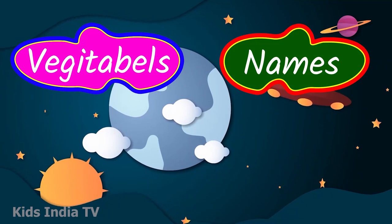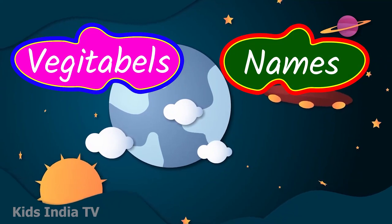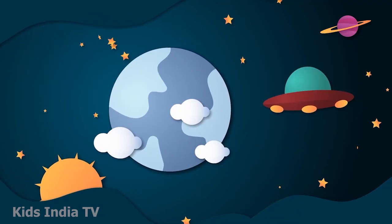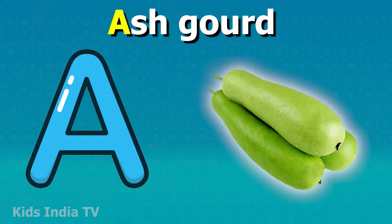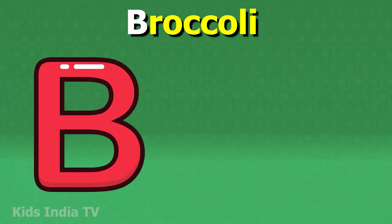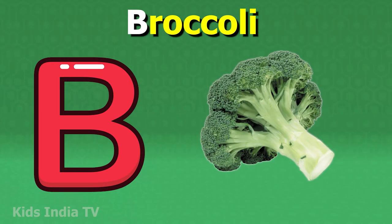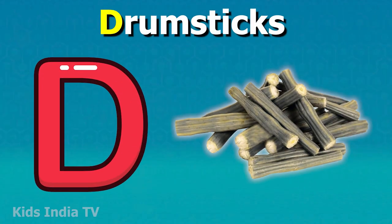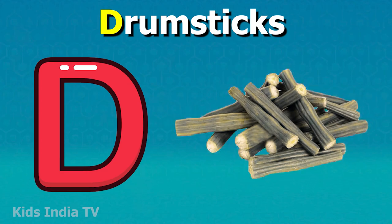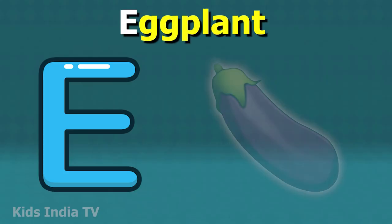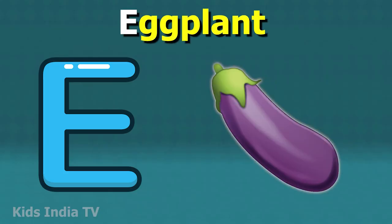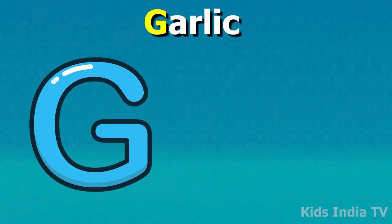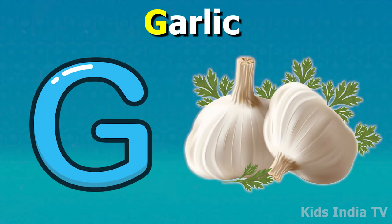Vegetable names according to alphabets. A for ash gourd, B for broccoli, C for carrot, D for drumstick, E for eggplant, F for fenugreek, G for garlic.